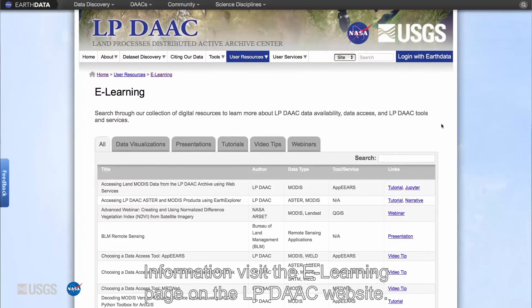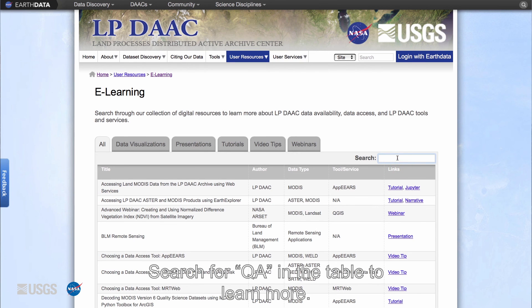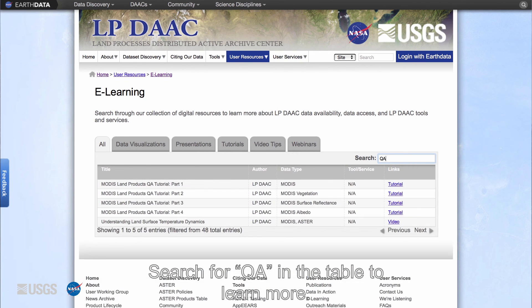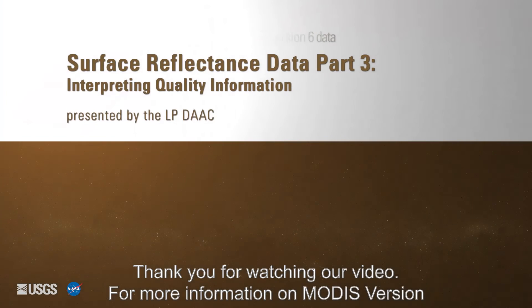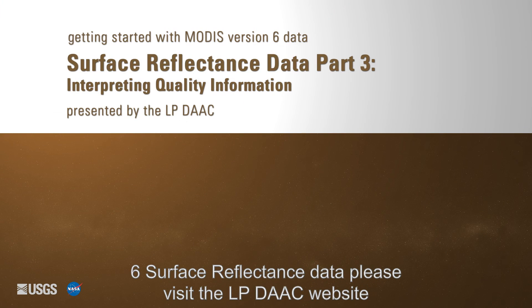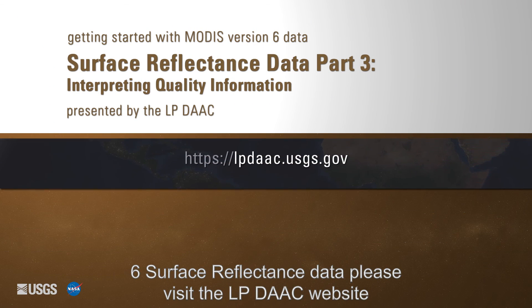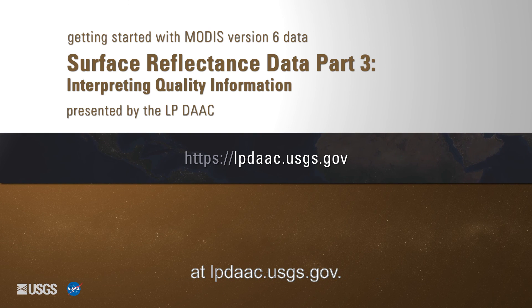For more detailed materials about surface reflectance quality information, visit the e-learning page on the LP DAAC website and search for QA in the table to learn more. Thank you for watching. For more information about MODIS version 6 surface reflectance data, please visit the LP DAAC website at lpdaac.usgs.gov.